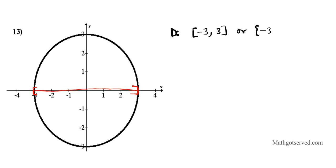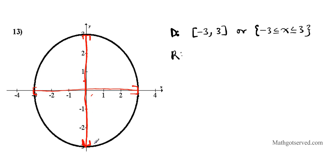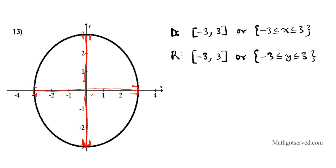And then the range — the range is the vertical span of the graph. The graph goes as high as 3 and as low as negative 3, and both are included. So the range is from negative 3 all the way to 3 using interval notation with brackets, or using inequality notation, negative 3 less than or equal to y less than or equal to 3.